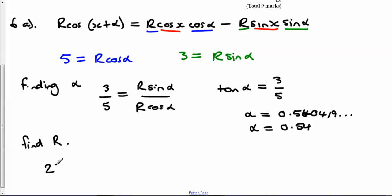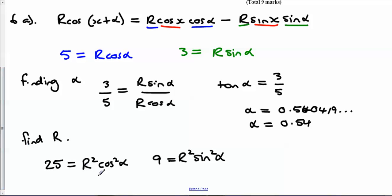So we end up with 25 equals R squared cos squared alpha, and 9 equals R squared sin squared alpha. If we then add those two together, we end up with 25 plus 9 is equal to R squared cos squared alpha plus R squared sin squared alpha.